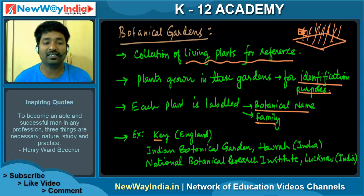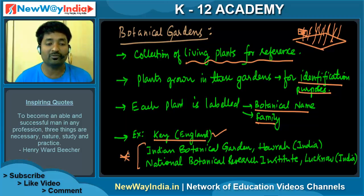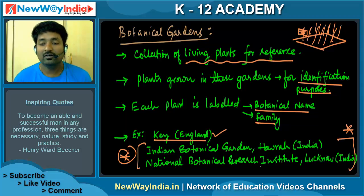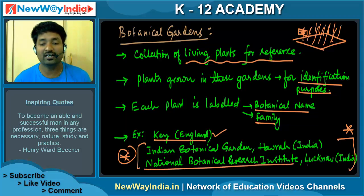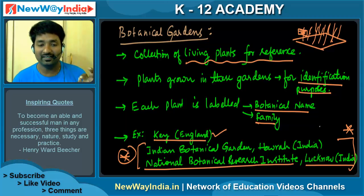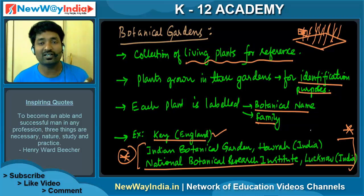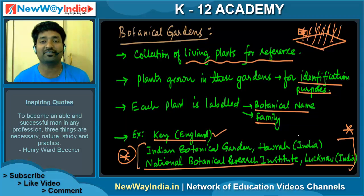For example, Kew in England has a famous botanical garden, which is important from your examination point of view. In India, the Indian Botanical Garden is located in Howrah, India, and the National Botanical Research Institute, NBRI, is in Lucknow, India. Try to remember these two names — they are very important from a competitive exam point of view.